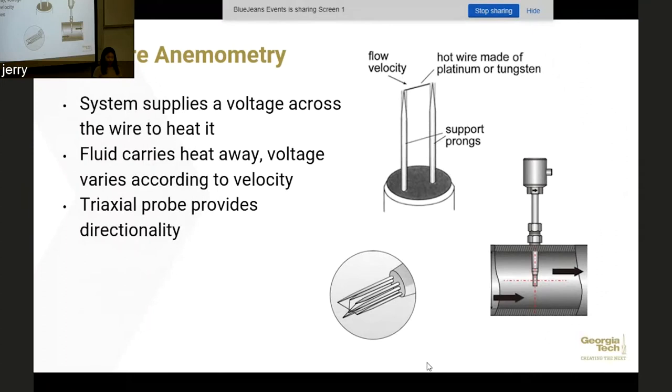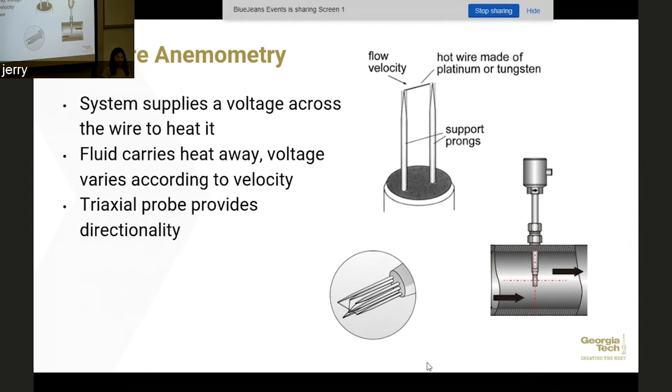All right, so the first method I'll cover is hot wire anemometry. In this, a long probe stem is inserted into the flow and at the end of that probe stem you have two support prongs shown in this picture. Running across those prongs there's a very thin wire that is heated by a circuit in the system. The system supplies a voltage to keep this wire to a constant temperature. As flow flows over the wire it carries heat away and the system then has to supply more voltage to compensate for this. You end up with a variable voltage measurement that corresponds to the specific velocity in your flow. Typically you would calibrate the probe before you take data to a set of known velocities and you would measure the voltage at each of those velocities to create a polynomial curve. Then once you actually take data you're taking the voltage data which you can then convert to the velocity.